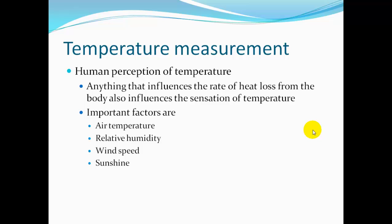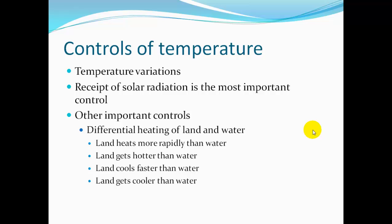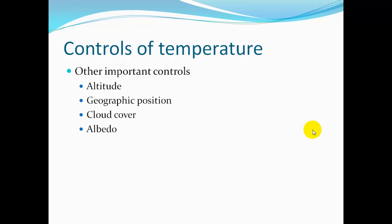Human perception of temperature is influenced by anything affecting the rate of heat loss from the body. Important factors are air temperature, relative humidity, wind speed, and sunshine. The receipt of solar radiation is the most important control — the more solar radiation you're in, the warmer you feel. Other important controls include differential heating of land and water — land heats more rapidly, gets hotter, cools faster, and gets cooler than water — as well as altitude, geographic position, cloud cover, and albedo.